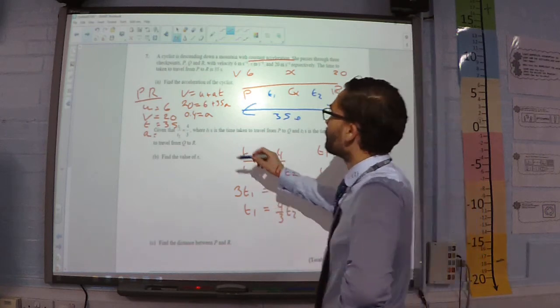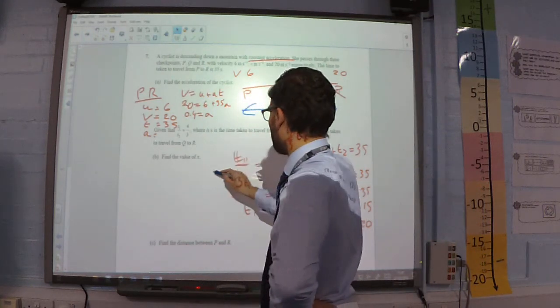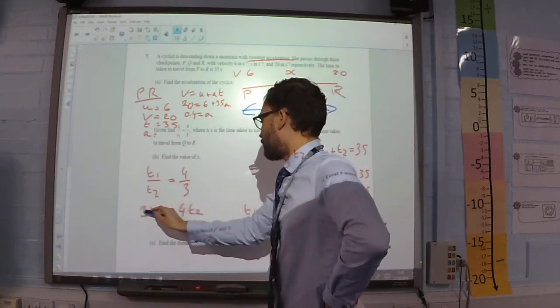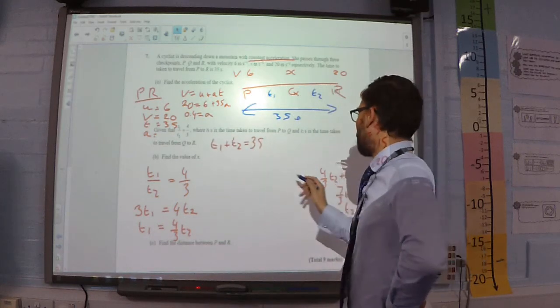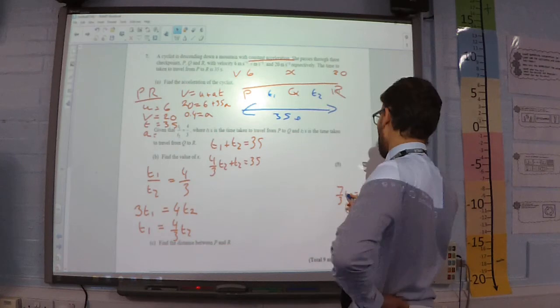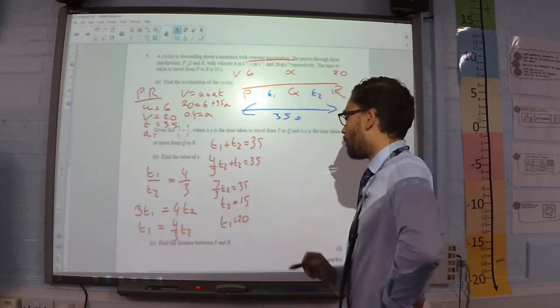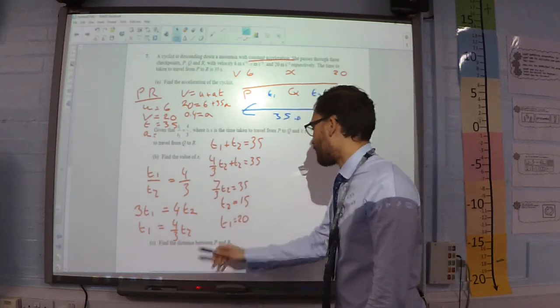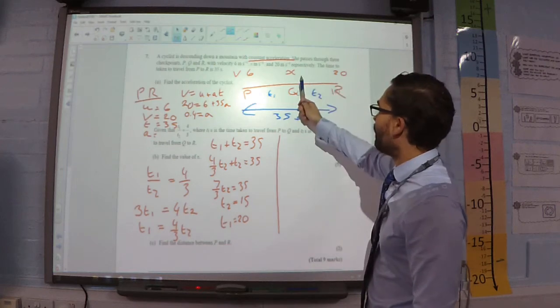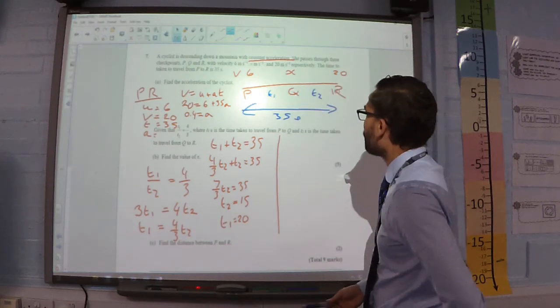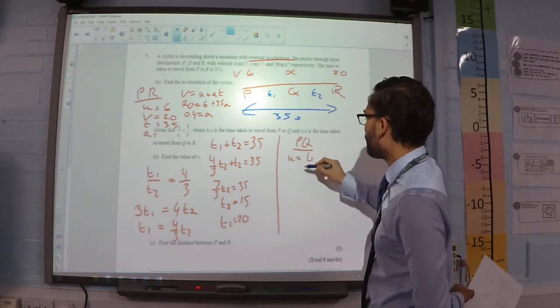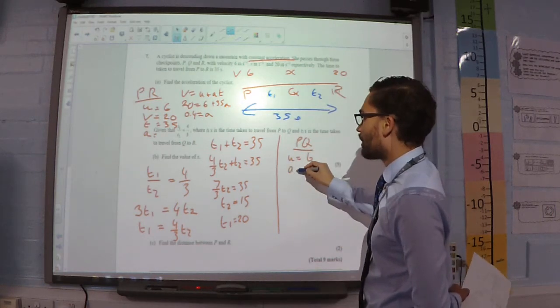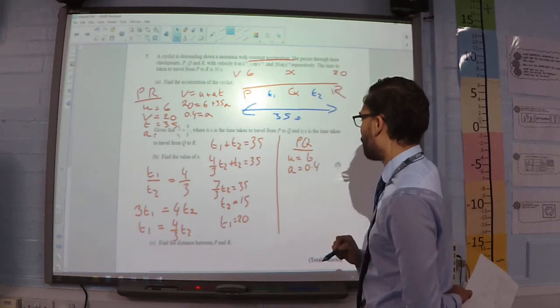Now that I've got those separate times, I want to work out what the velocity is when it gets to Q. So, if you look at P to Q, I've got initial velocity is 6. I worked out acceleration previously as 0.4. The time it takes to do that is 20.